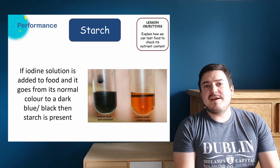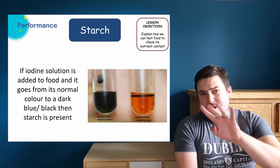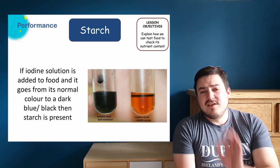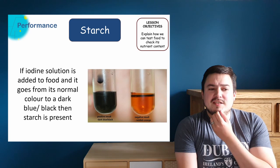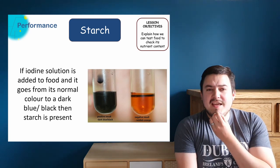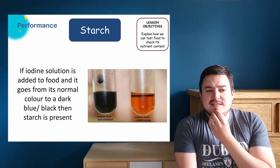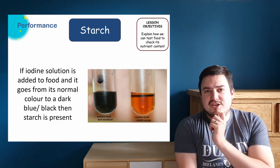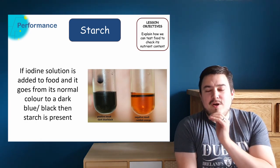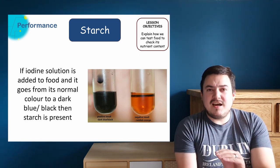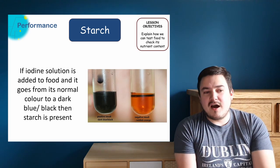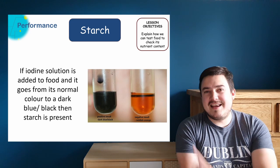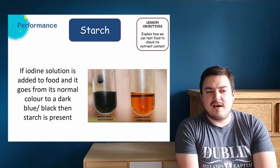To check food to find out what nutrients it contains, we can do four different tests. The first is the test for starch, which involves using iodine. In its normal color, iodine is a reddish-orange color. When you mix it with food that contains starch, the iodine will turn a dark blue-black color, as you can see in the left-hand image.